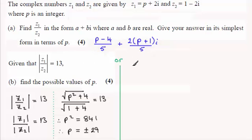So if we were to square both sides, that is squaring the 13, we would have P minus 4 all squared over 5 squared, 25 in other words, plus the imaginary part squared, so that's going to be 4 lots of P plus 1 all squared over 5 squared which is 25, is going to equal 13 squared which is 169. So it's just a question of solving this equation now for P.